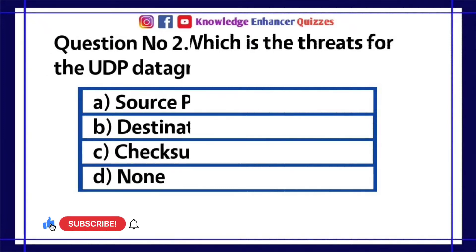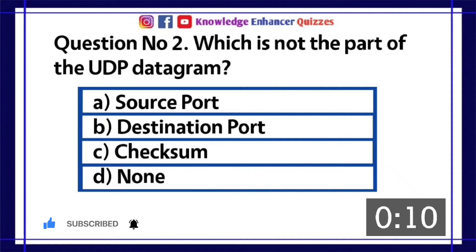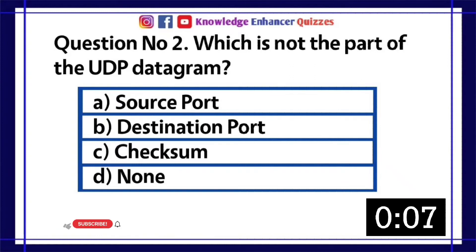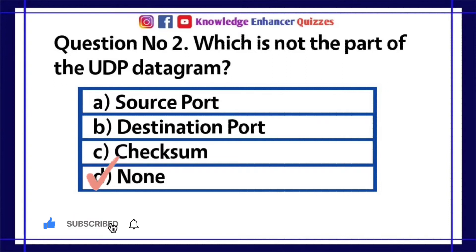Question number 2. Which is not the part of the UDP datagram? A. Source port. B. Destination port. C. Checksum. D. None. Option D is the right answer.